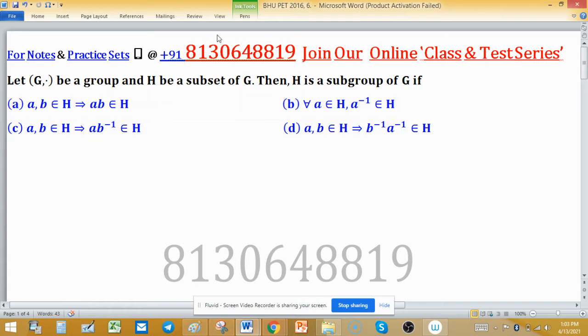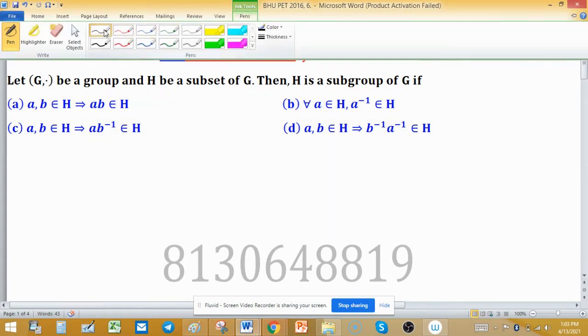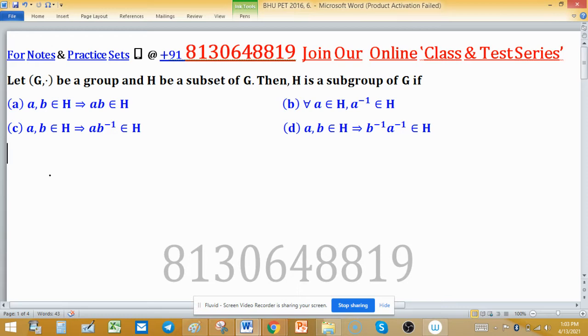Because if we are picking any two elements, then all four properties will be satisfied for a group: closure, associative, identity, and inverse.